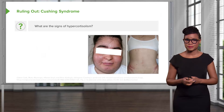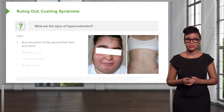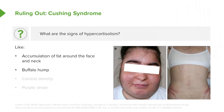Let's rule out Cushing syndrome. What are the signs of elevated cortisol in a patient who presents with hirsutism? They may have fat accumulation around the face and neck, a buffalo hump — though this can also be seen in an obese patient — and they typically have central obesity around the abdomen and belly. One distinguishing feature is purple striae. These are not normal stretch marks. As you can see in panel B, this patient has purple striae, appearing purple as opposed to dark, because you can see the vessels in the thin skin of a patient who has elevated cortisol.